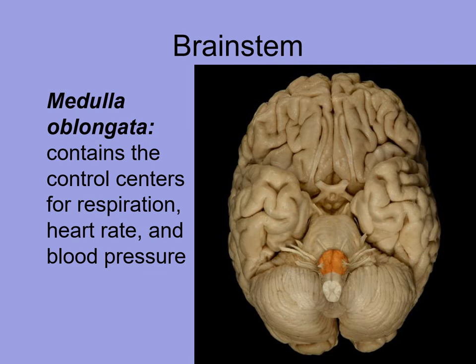The medulla oblongata is also part of the brain stem. The spinal cord is right here, so information comes up through the medulla to the pons and further up into the brain. The medulla contains control centers for respiration, controlling heart rate, and controlling blood pressure. Damage to the medulla or to any area of the brain stem is very critical because of these control centers that are essentially keeping you alive.